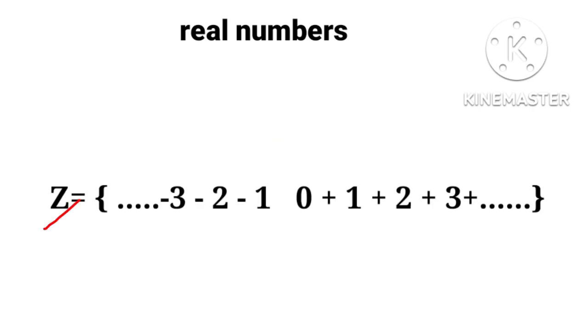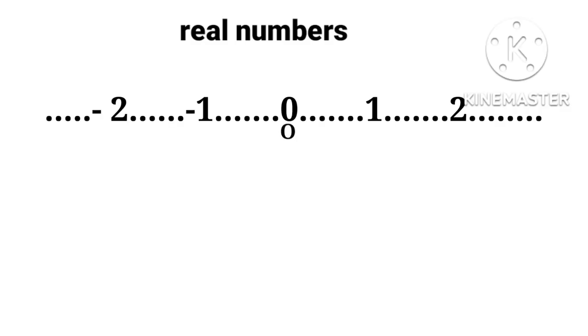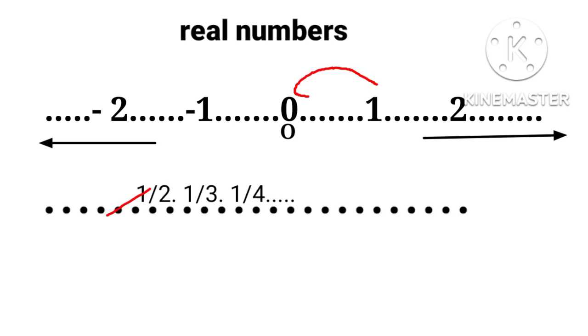Now we see between the two integers there exist fractions. For example, 1/2, 1/3, 1/4, which are called rationals, defined as Q equals p upon q, such that p and q are integers and q is not equal to zero.